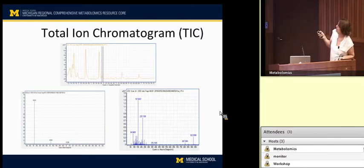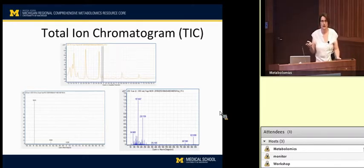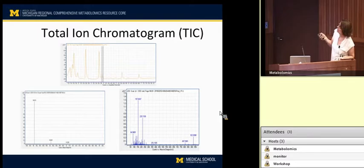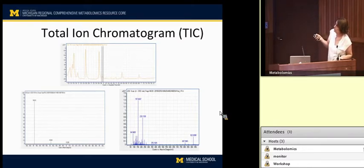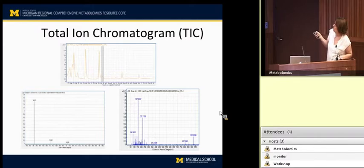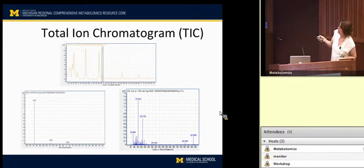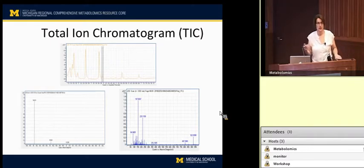Total ion chromatograms are dominated by a few peaks that are really abundant species. As opposed to a targeted analysis, when you're doing untargeted you may see, based on your extraction method, separation type, and instrument, a spectrum with the molecular ion plus or minus charge and its isotopes — and the spectrum is a lot busier in an untargeted study.